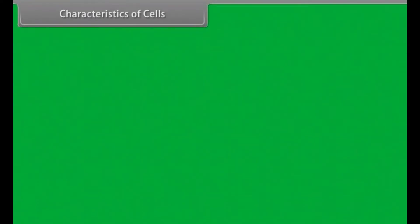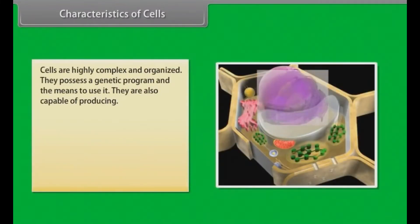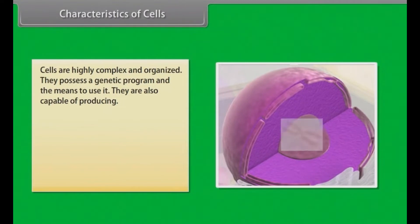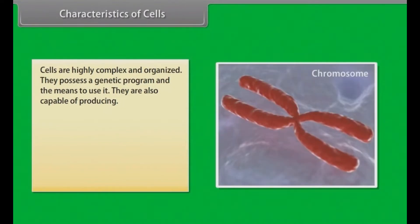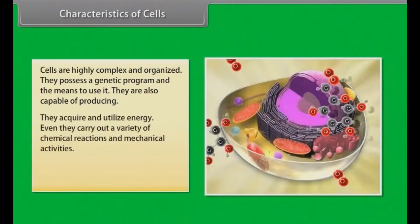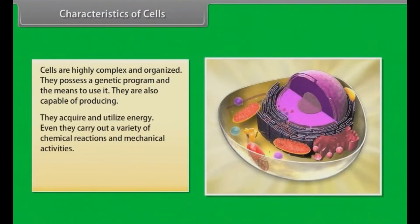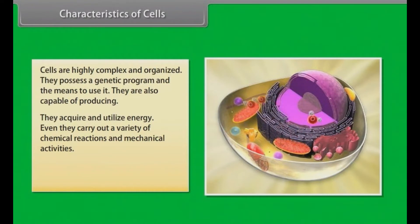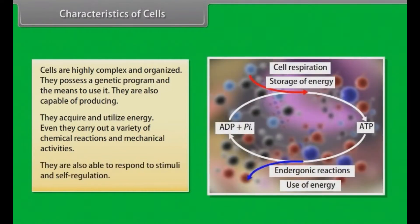Characteristics of cells. Cells are highly complex and organized. They possess a genetic program and the means to use it. They are capable of reproducing. They acquire and utilize energy. They carry out a variety of chemical reactions and mechanical activities. They are also able to respond to stimuli and self-regulation.